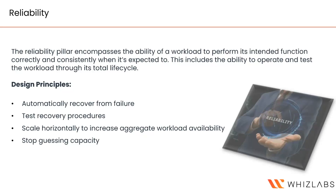The next principle is to stop guessing capacity. Instead of relying on a single instance that could become a single point of failure, monitor your demand, workload, and utilization, and add or remove resources to maintain the optimal level — avoiding resource saturation. Managing change through automation is another design principle: any changes happening through your infrastructure and environment should be automated as much as possible, tracked, and reviewed.